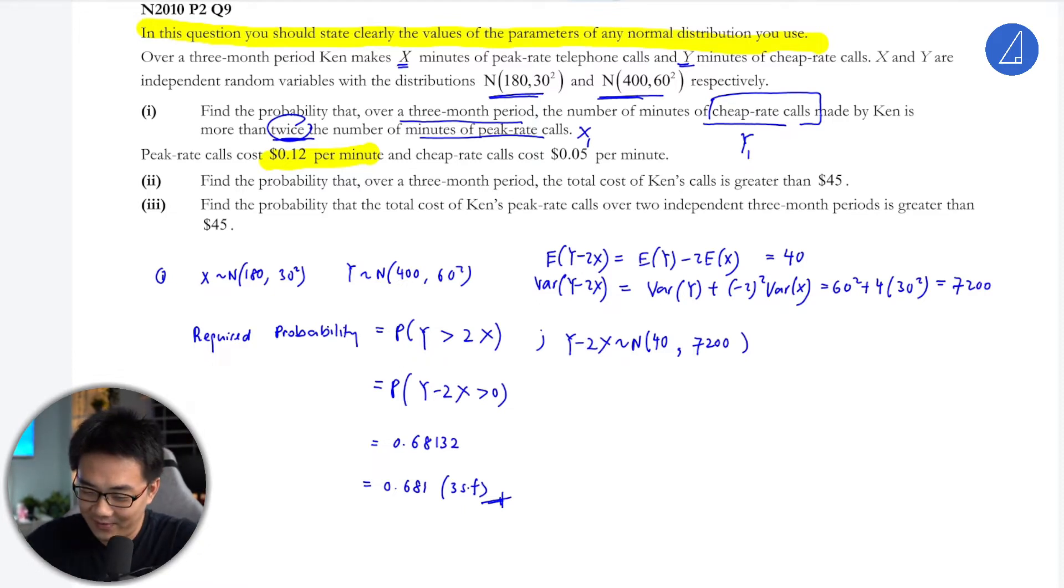The peak calls cost 12 cents and cheap calls 0.05. So probably over a three month period, the total cost of Ken's calls is greater than $45.